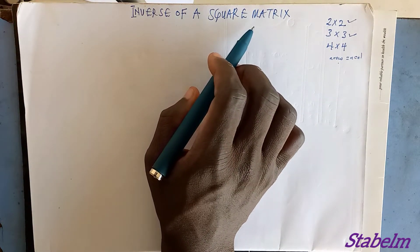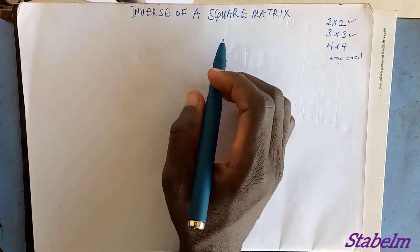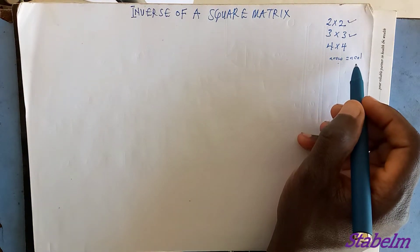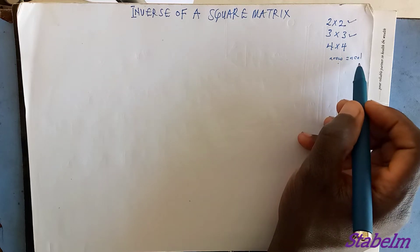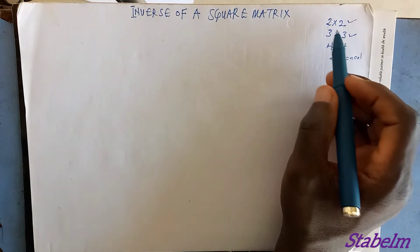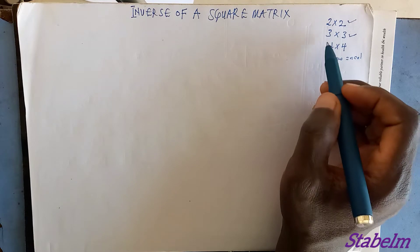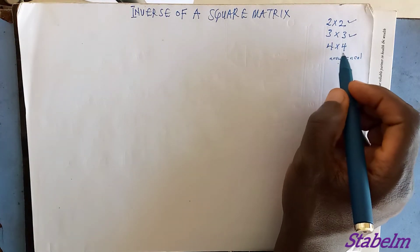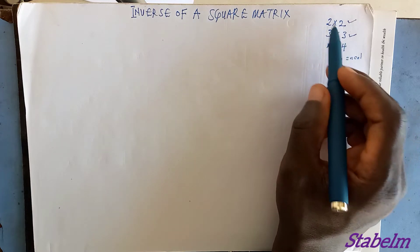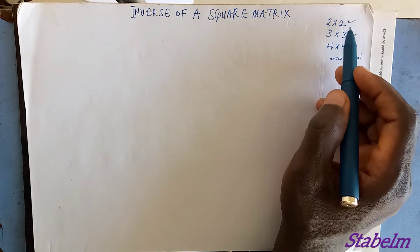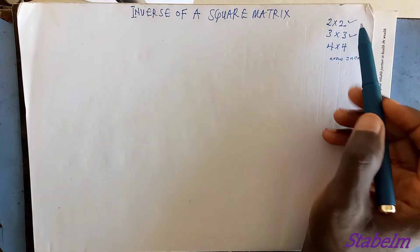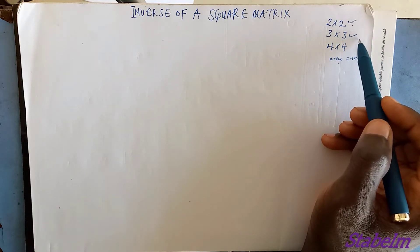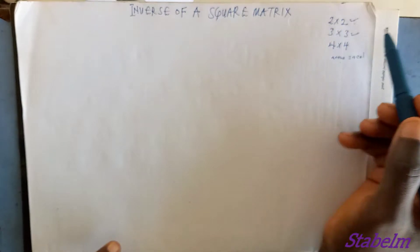The inverse of a square matrix — a square matrix has the same number of rows and columns. We can have a 2x2 matrix, a 3x3 matrix, or a 4x4 matrix where the number of rows equals the number of columns. In this video, we'll be looking at the inverse of 2x2 and 3x3 matrices.